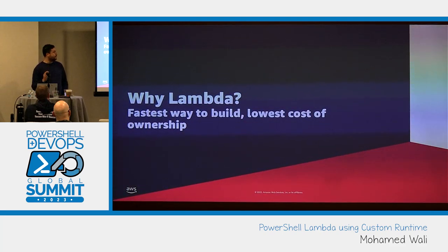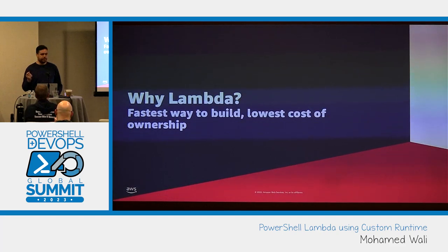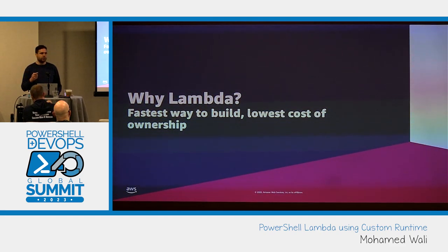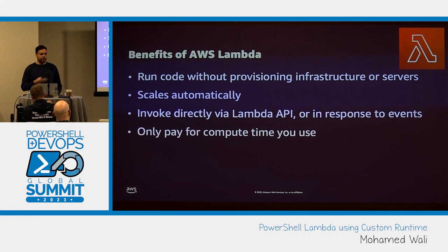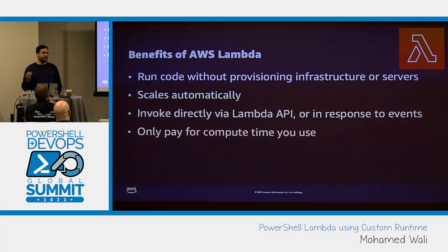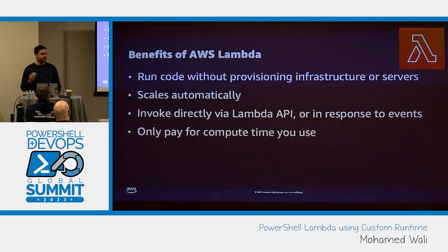So why Lambda? AWS Lambda is simply a compute service that runs on AWS that lets you run your code without having to worry about the underlying infrastructure by any means. Some of the benefits that come with AWS Lambda: you don't have to worry about provisioning servers or infrastructure — that part is totally managed for you. It scales automatically; you don't have to create your auto-scaling configuration, worry about it, or manage it long term.